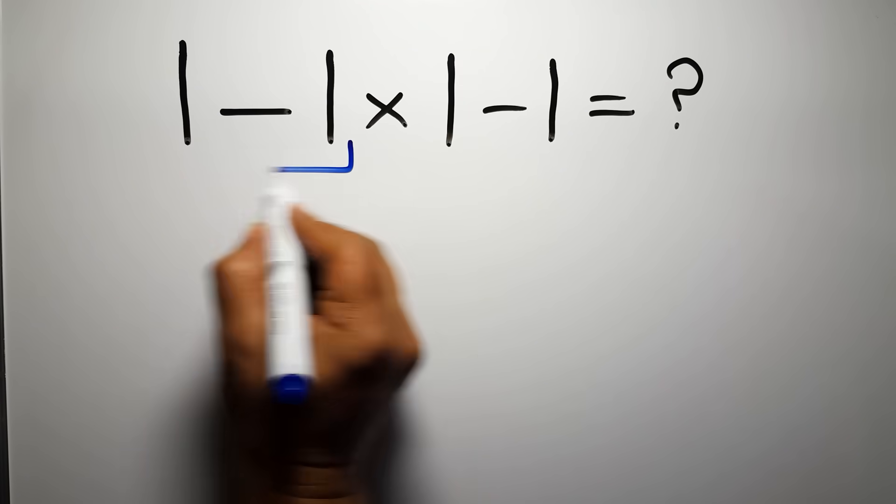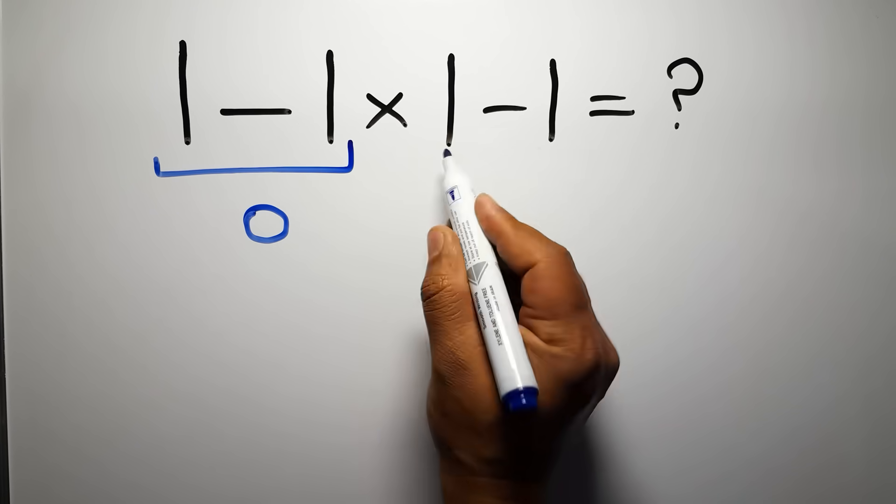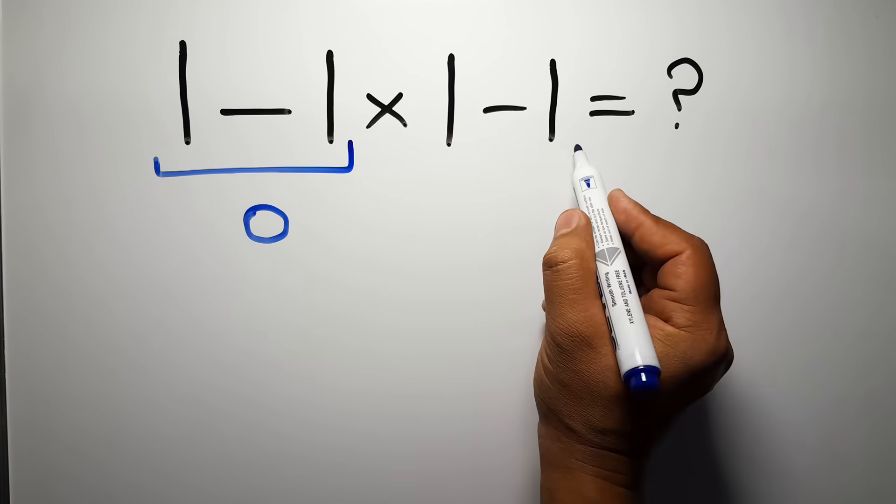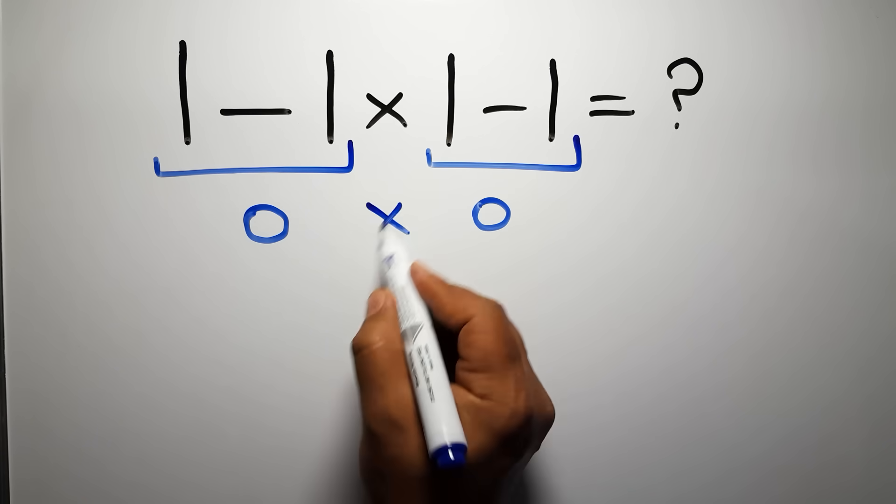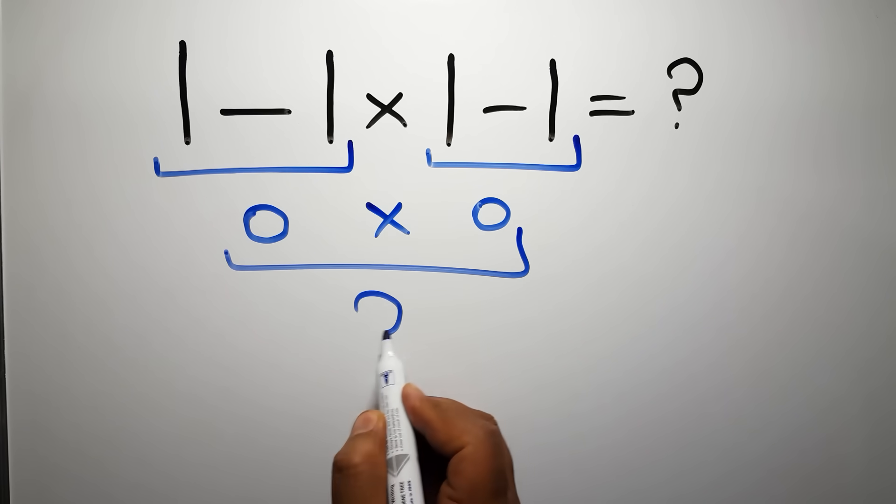1 minus 1 is just 0, and again here we have 1 minus 1, so 0 times 0 which equals 0. But this answer is not correct.